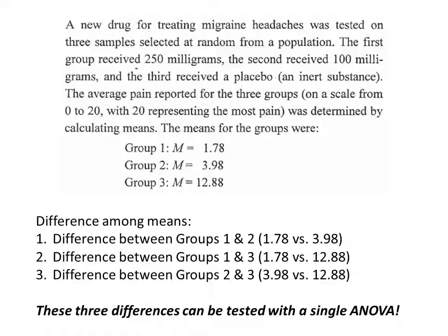The ANOVA can be used to test the differences among more than two means in a single test. With a t-test, you would have to repeat the test several times, but with an F-test or ANOVA, the differences among more than two means can be tested all at once in a single test.